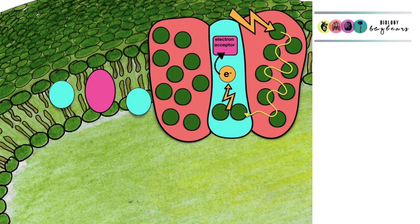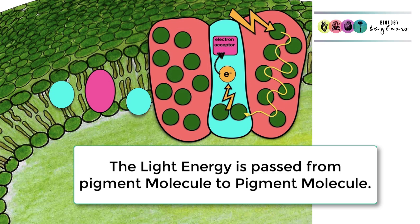Light energy gets absorbed by these pigment molecules that are arranged in photosystem 1. The light energy is passed from pigment molecule to pigment molecule until it reaches a reaction center chlorophyll.